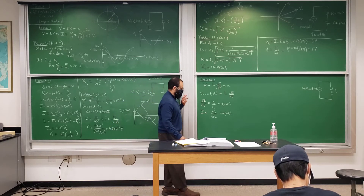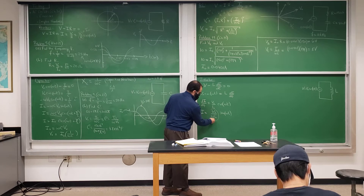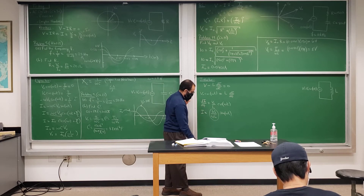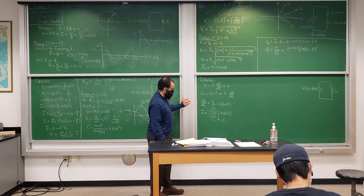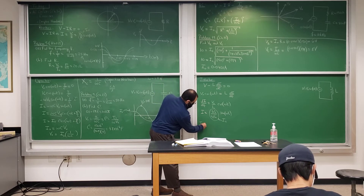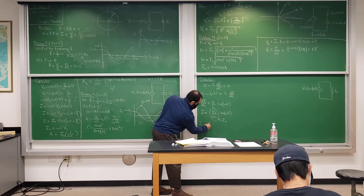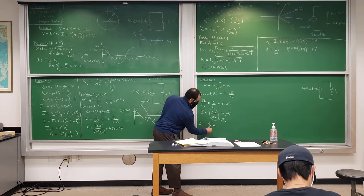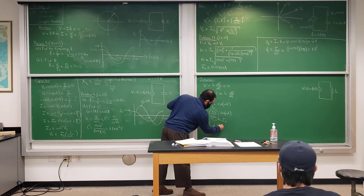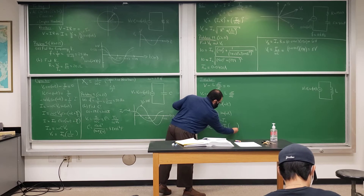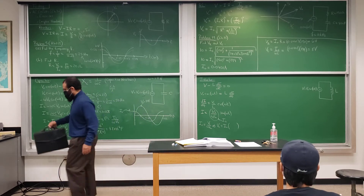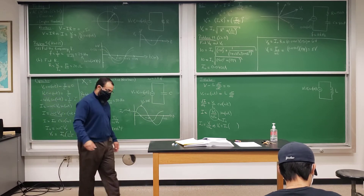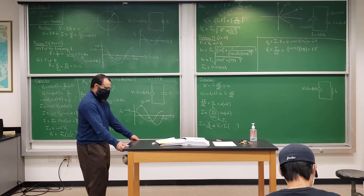The maximum current is V0 over omega L. Rearranging to get an Ohm's law form: V0 equals I0 times omega L. So omega L behaves like a resistance — we can multiply both sides by omega L to get the relationship.